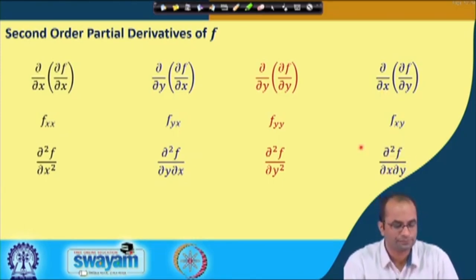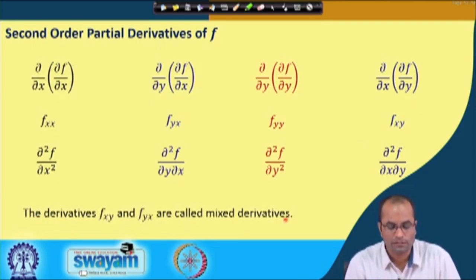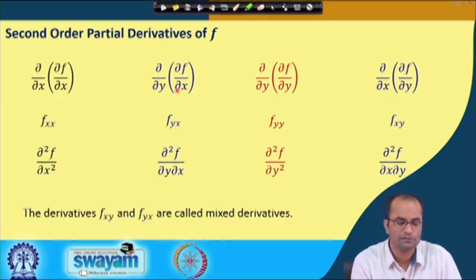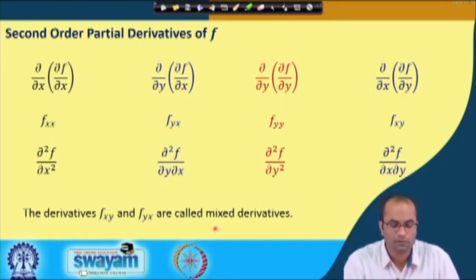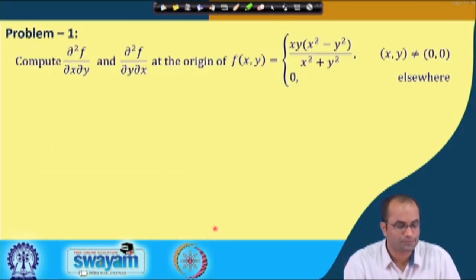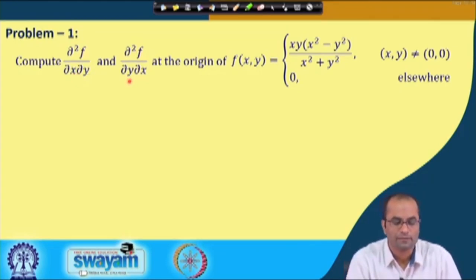Similarly, the notation for two times partial derivative with respect to y is f_yy or ∂²f/∂y², and first with respect to y then with respect to x is f_xy or ∂²f/∂x∂y. These derivatives f_xy and f_yx are called the mixed derivatives because we have used both variables — first with respect to x then with respect to y, or first with respect to y then with respect to x. Let us directly compute these mixed derivatives ∂²f/∂x∂y and ∂²f/∂y∂x at the origin for a given function.